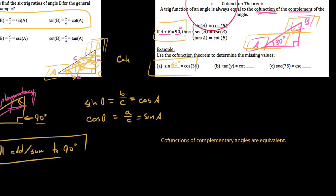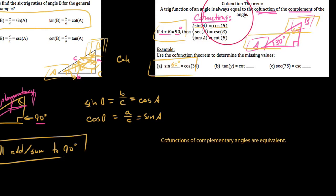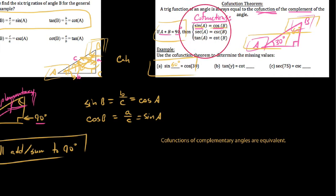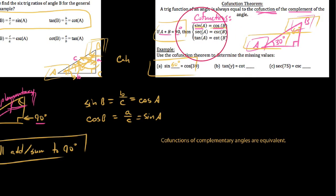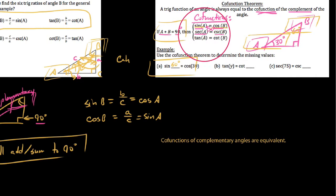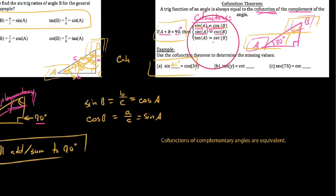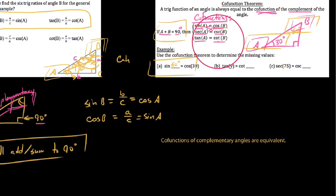Co-functions are any pair of trig functions where the function of one angle equals the other function of its complement. Sine and cosine are co-functions — the sine of one angle is always the cosine of its complement. Since secant and cosecant are the reciprocals of cosine and sine respectively, the secant of an angle always equals the cosecant of its complement. And tangent and cotangent are also co-functions — the tangent of an angle equals the cotangent of its complement.